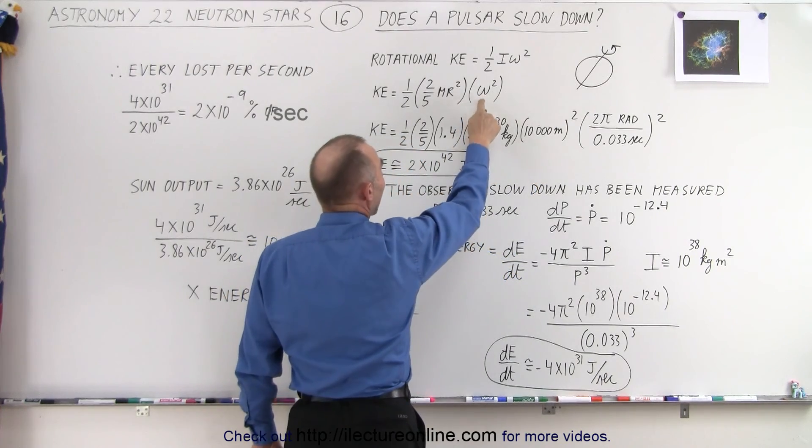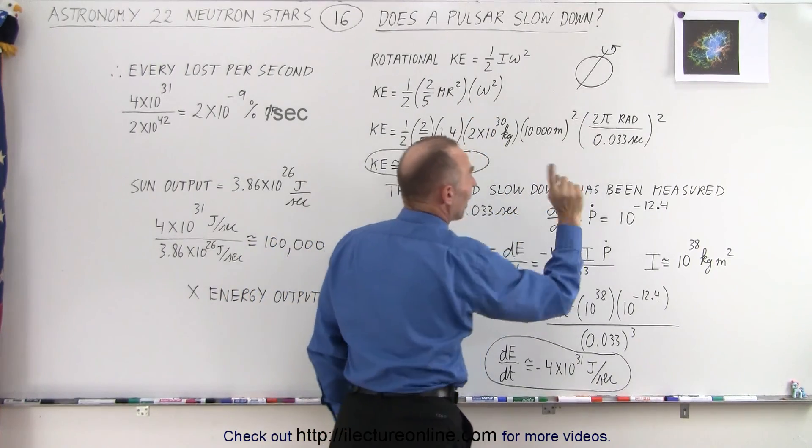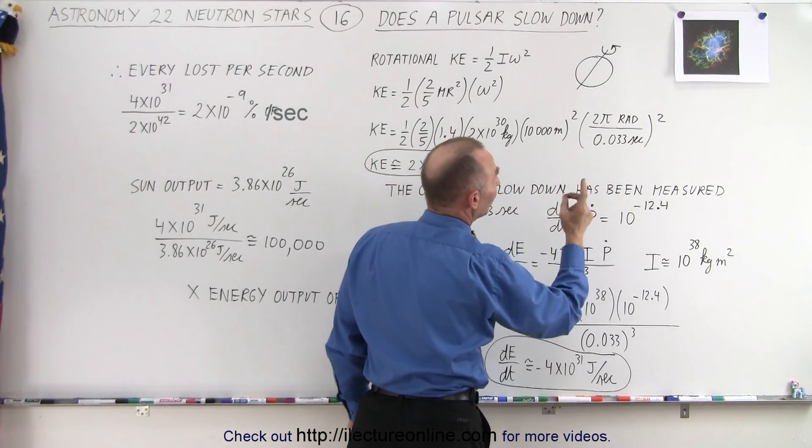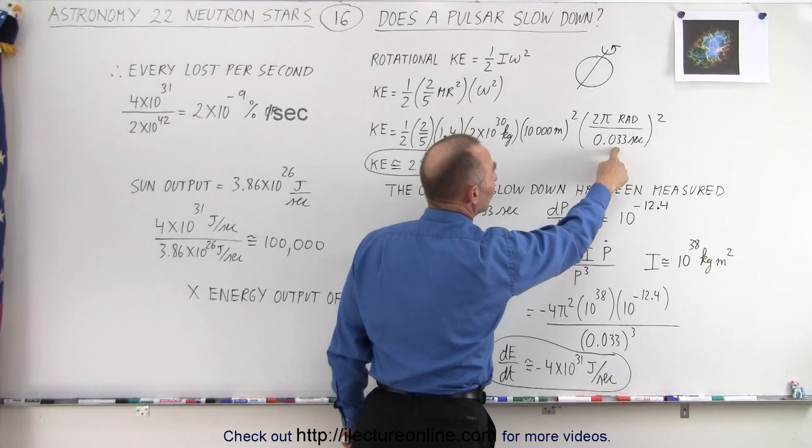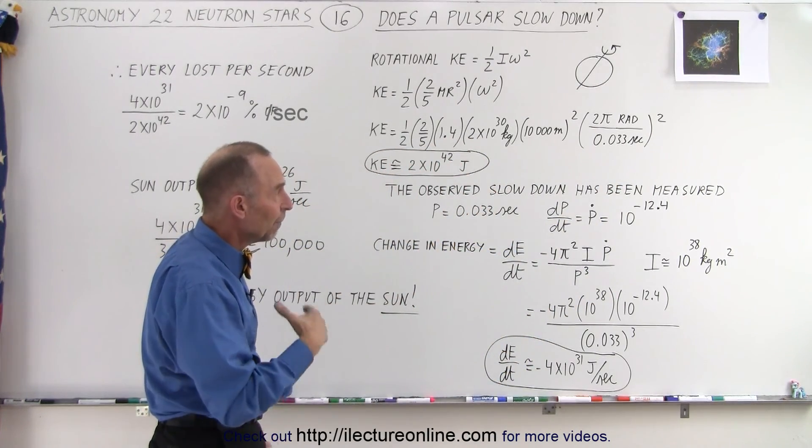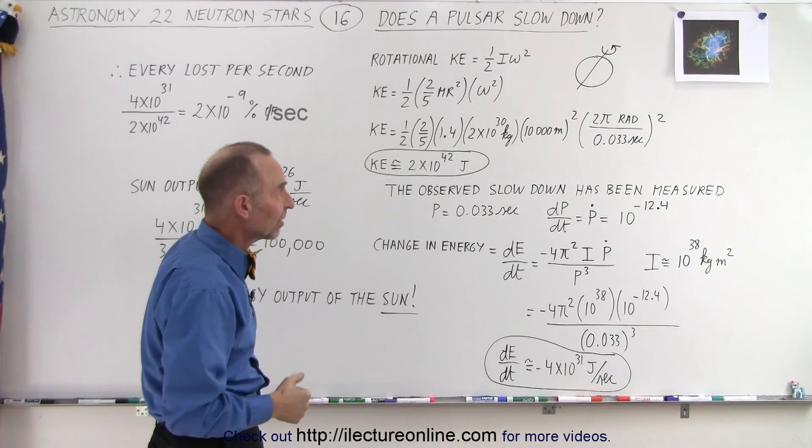Which is about 10 kilometers squared in meters, and then we multiply times the angular velocity. It goes around on its axis, 2π radians, 1 revolution, every 0.033 seconds, because it flashes about 30 times per second, which gives us a pulse of 0.033 seconds.